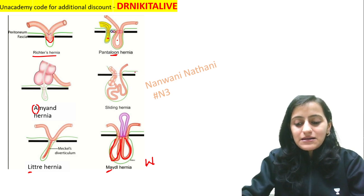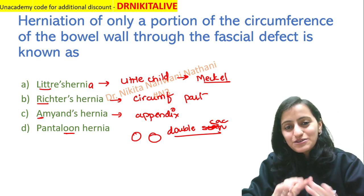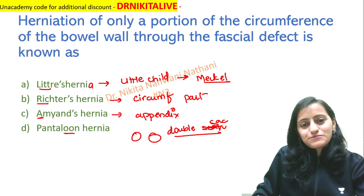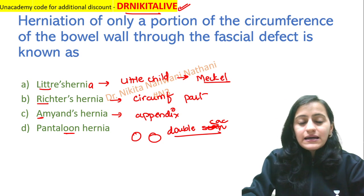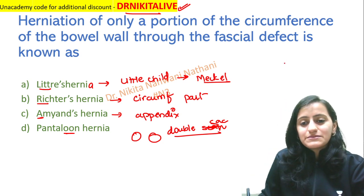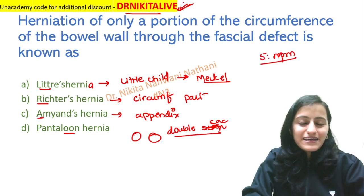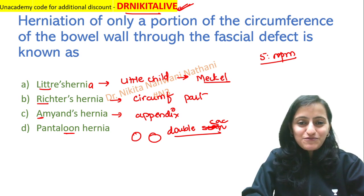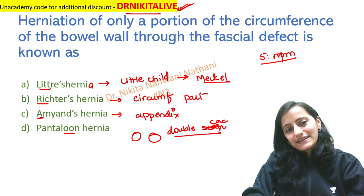That was a quick look at the mnemonics for named hernias. Please watch the entire 20 hernia mnemonics in the PLUS class. Potential subscribers can use the code Dr. Nikita Life for an additional discount. I'm also waiting to see you in the free live classes on the Unacademy app, which I take daily at 5 p.m. Use code Dr. Nikita Life to unlock the sessions if asked. Thank you so much for watching. Goodbye, take care, keep studying, keep revising, and keep winning. Thank you.